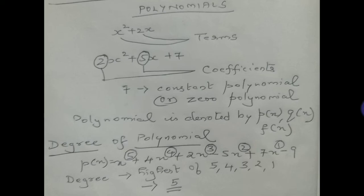So listen carefully: whenever a polynomial is given, look at all the powers. In x⁵ + 4x⁴ + 2x³ − 5x² + 7x − 9 the powers are 5, 4, 3, 2, 1 — the highest is 5, so the degree is 5. Take this example: x³ + 2x² − 5x + 7 — the degree is 3. Another example: x¹⁰ + 9x⁹ + 4x⁸ − 7x⁷ + 5x² + 8 — the degree is 10. Whichever power is greatest, that is your degree of the polynomial.